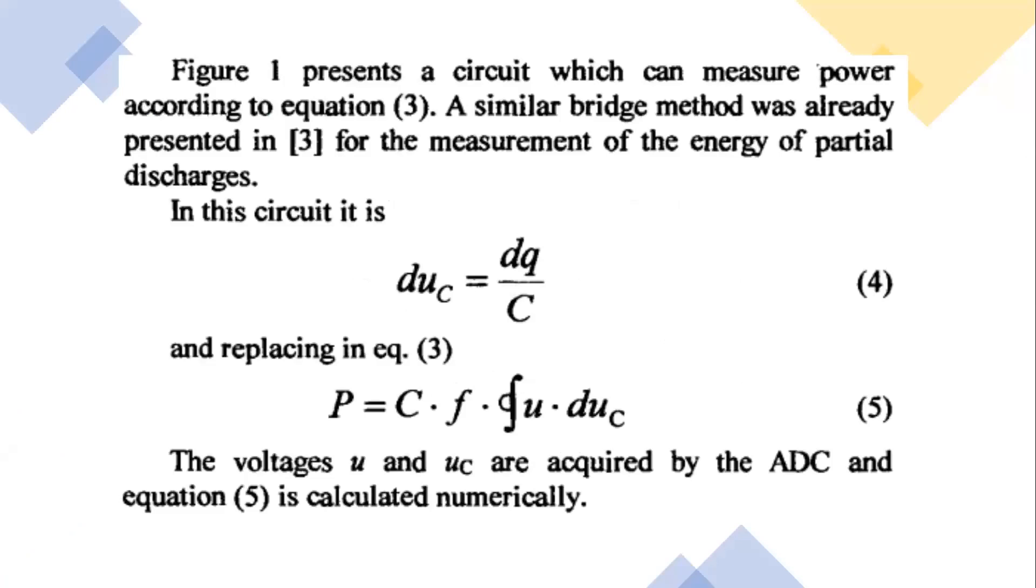Figure 1 presents a circuit which can measure power according to equation 3. A similar bridge method was already presented for the measurement of energy of partial discharges. In this circuit, the differentiation of Uc equals differentiation of Q by C, and replacing in equation 3, P equals C times f times the integration of u into dUc. The voltages u and Uc are acquired by the ADC and equation 5 is calculated numerically.